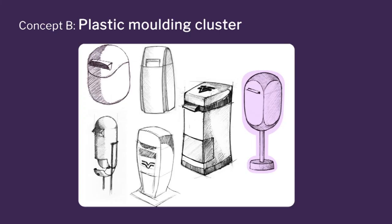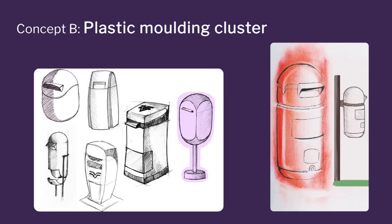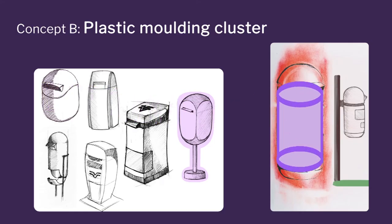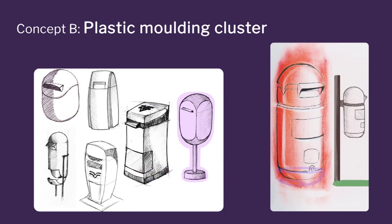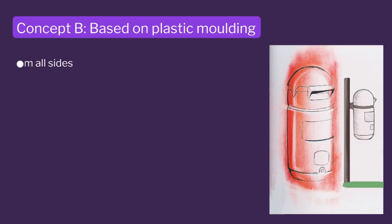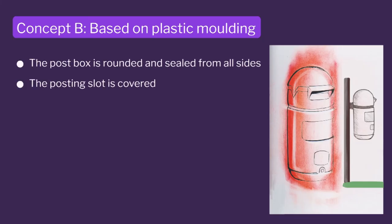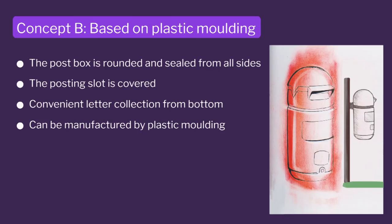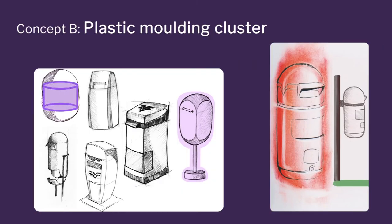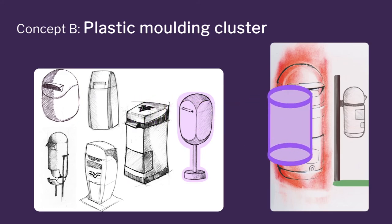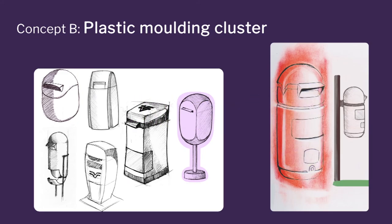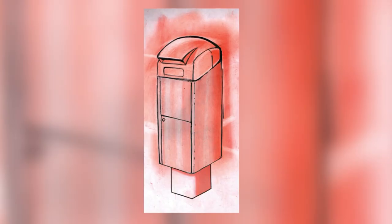Look at the next cluster and its representative concept. It is inspired by all the other aspects but is very close to the champion idea. There is an opening from the bottom in this design, which is still being retained. Rounded shapes mean no rusting, completely sealed boxes, and letter collection is very convenient from the bottom. It can be manufactured using a plastic molding process and looks very new and innovative, but the issue of vandalism is not solved.